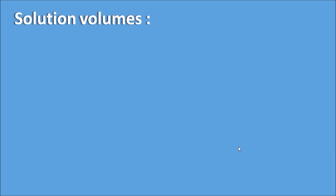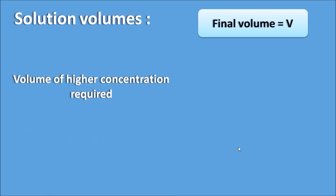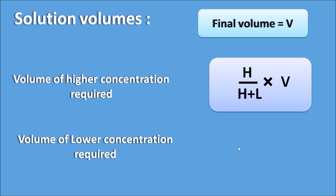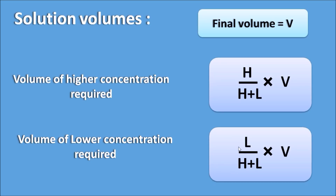Now for questions involving solution volume, let us see how we can calculate the solution volumes. If we indicate the final volume as V, then the volume of the higher concentration required is given by the formula H divided by (H plus L) multiplied by V. Similarly, the volume of the lower concentration required is given by L divided by (H plus L) multiplied by V.